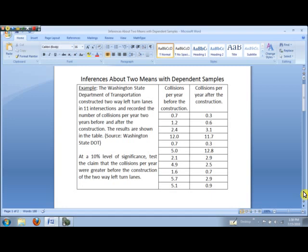Notice here, sometimes the data decreased, meaning there were fewer accidents after the construction. Sometimes it actually increased. And so what we want to know is, on the whole, were the collisions greater before the construction than afterwards?